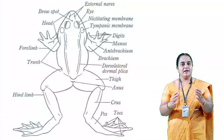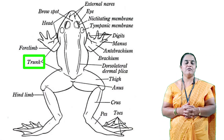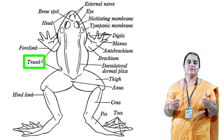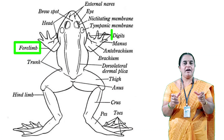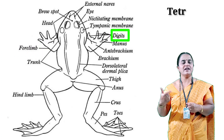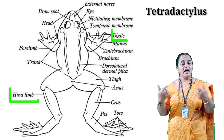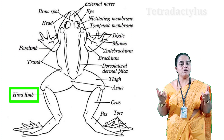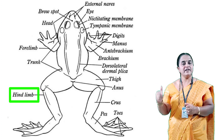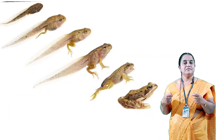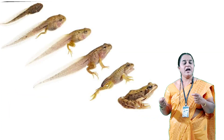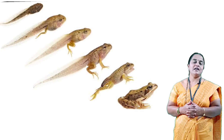Looking at the abdomen or trunk part of the frog, it has two pairs of limbs. The forelimbs are shorter, having four digits — so it is tetradactylous. The hindlimbs are longer than the forelimbs, having five digits, so they are called pentadactylous. In larval life we can see a tail, which reduces and becomes invisible in juvenile frogs.